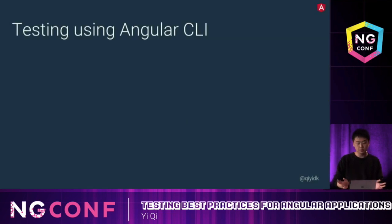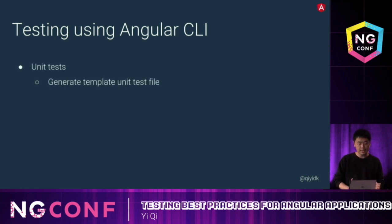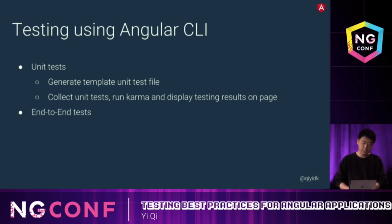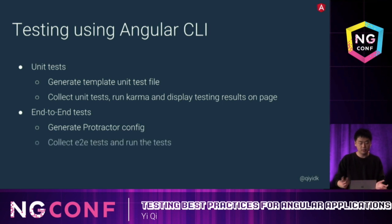We also have Angular CLI support for testing. For unit tests, it can generate a template unit test file for each newly generated component, and it can collect unit tests, run Karma, and display the testing results on the page. For E2E tests, it can also generate a Protractor config, collect tests, and run tests. That's all the utilities we have.